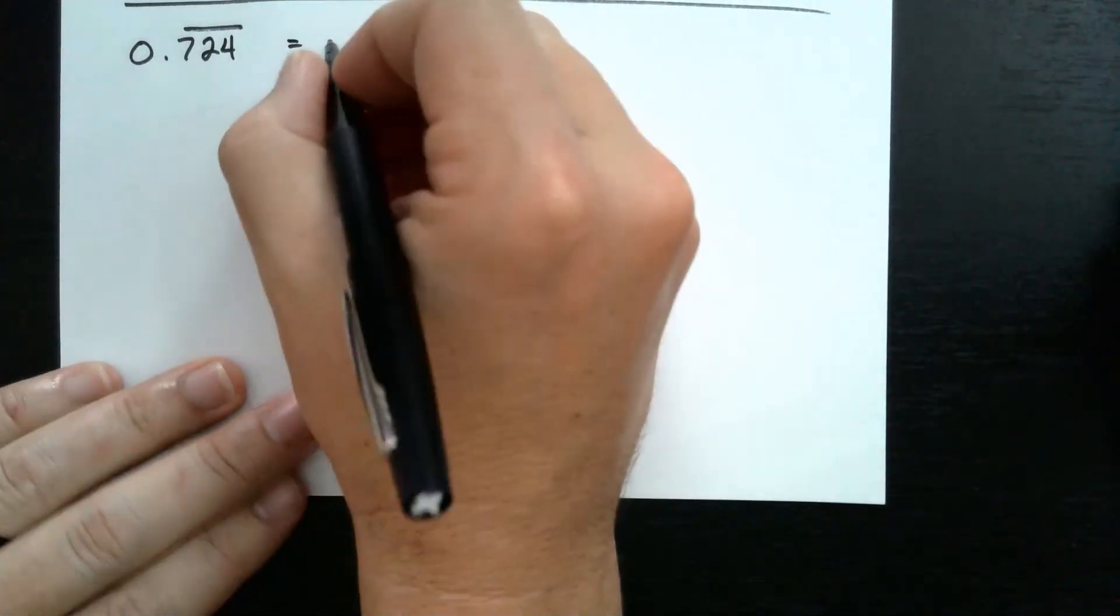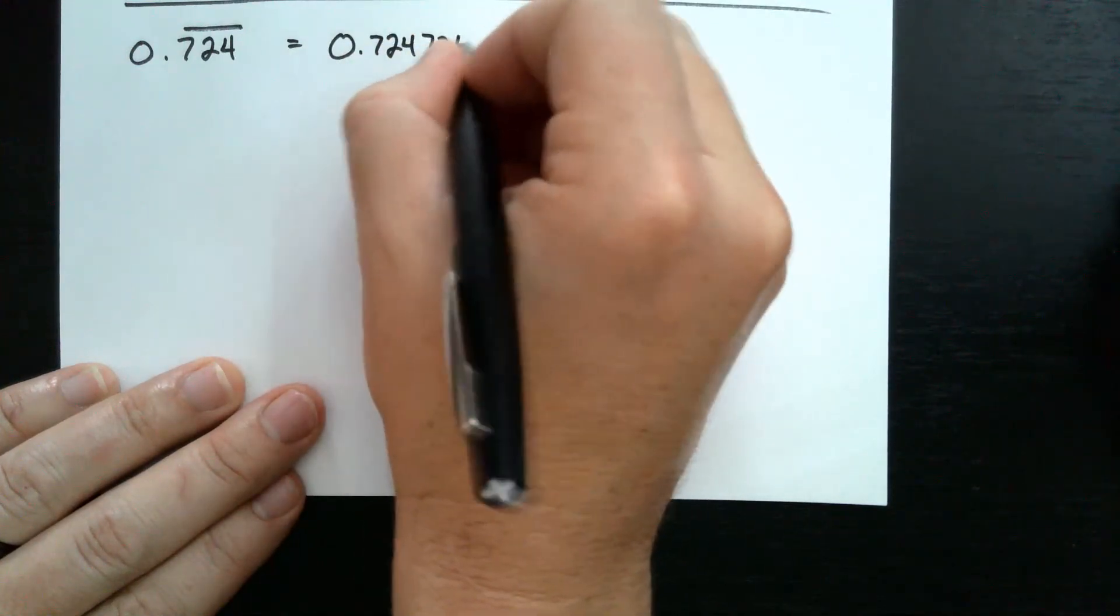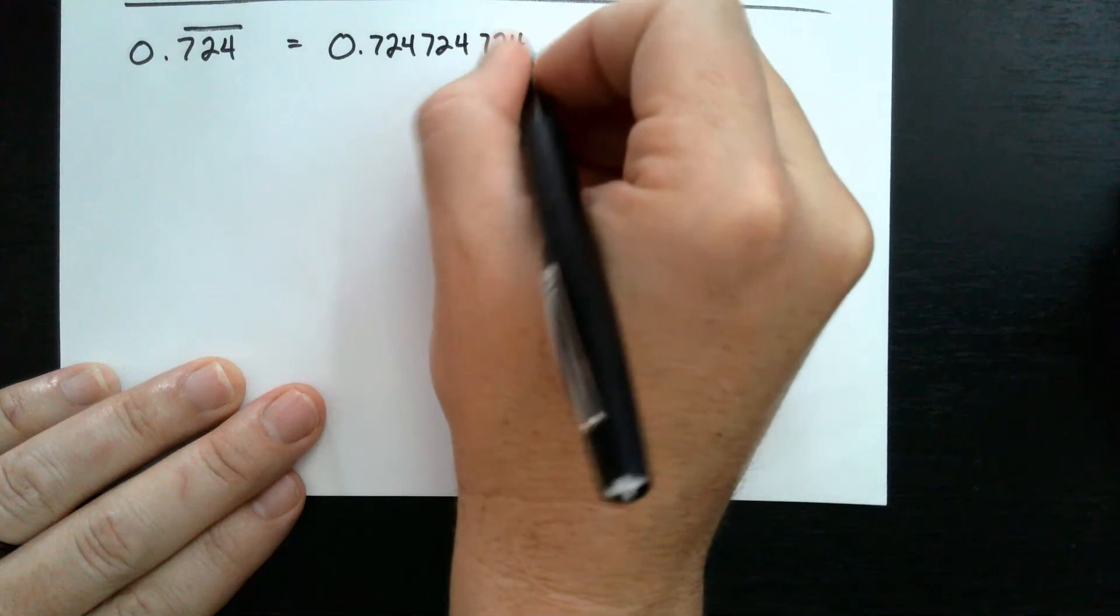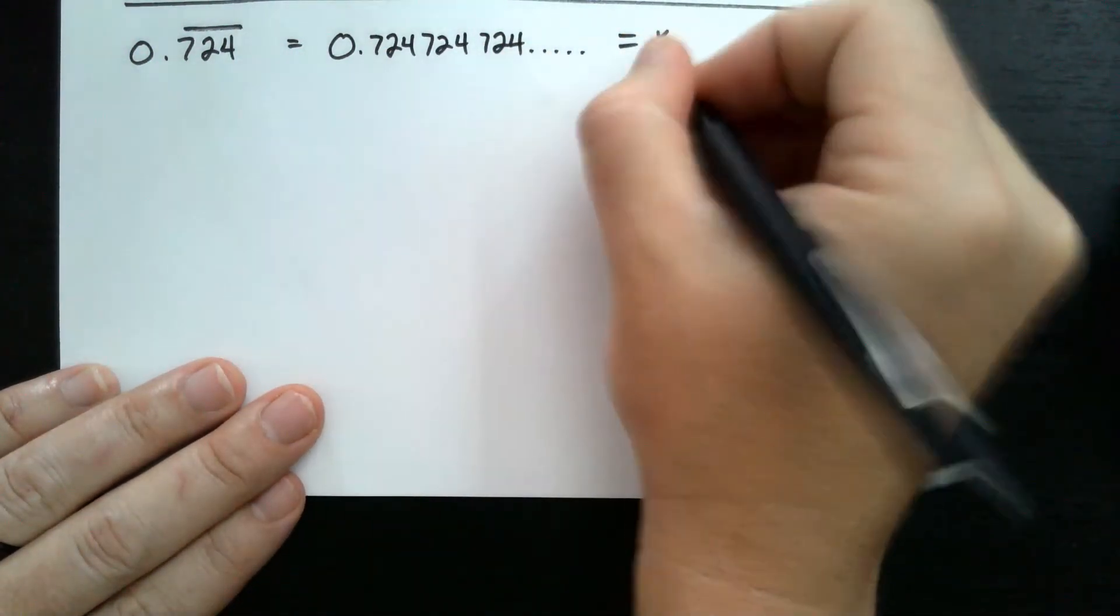So that's the same thing as 0.724, 724, 724, repeating. So again, we're going to set that equal to x.